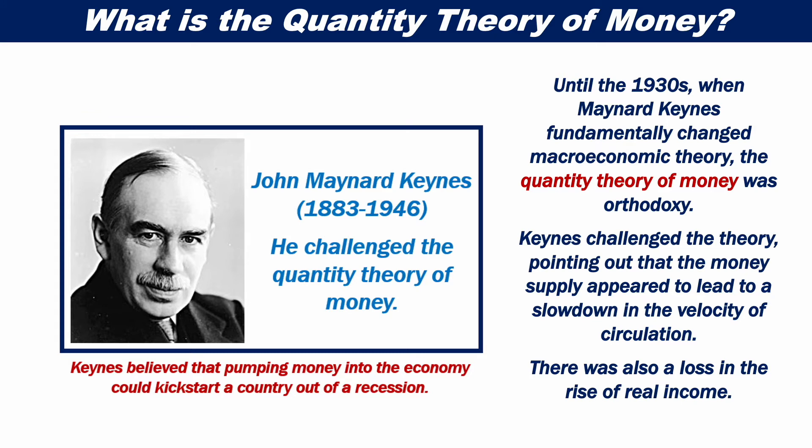Keynes challenged the theory, pointing out that the money supply appeared to lead to a slowdown in the velocity of circulation. There was also a loss in the rise of real income.